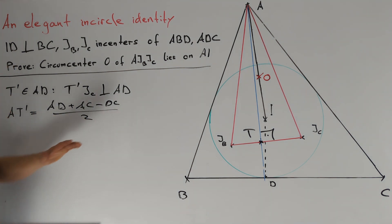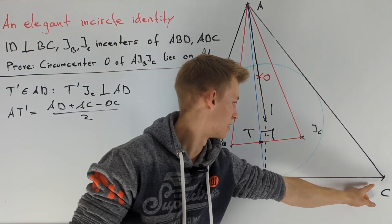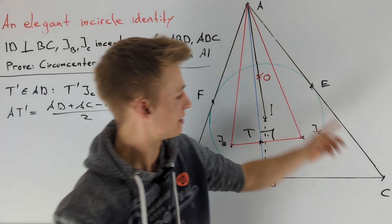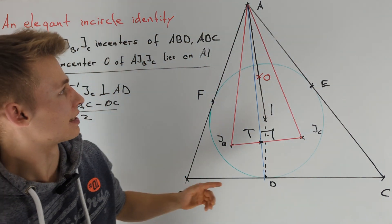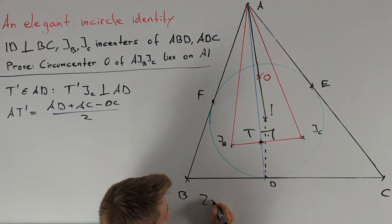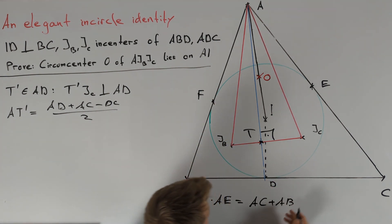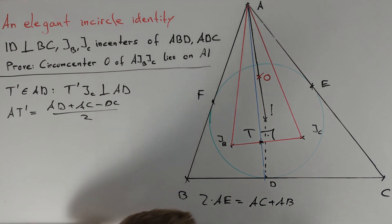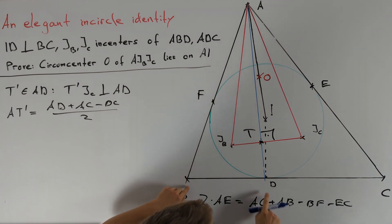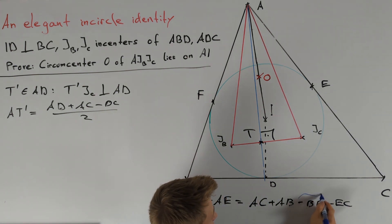To see why this formula is true in general, I'll sketch a proof using triangle ABC. Introduce points E and F as the incircle touching points on sides AC and AB. Length AE equals AF, so 2AE equals AB + AC - BF - EC. Since BF equals BD and CE equals CD, we get 2AE = AB + AC - BC.